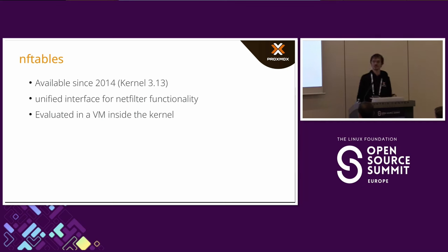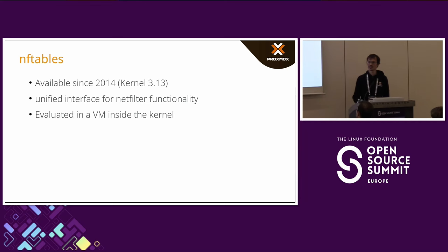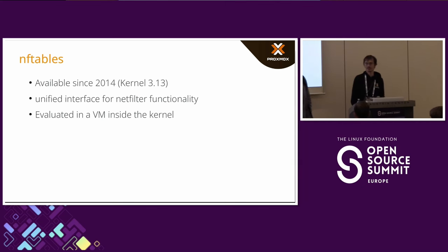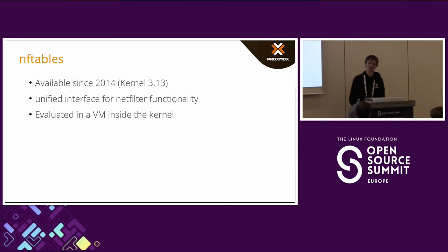The way it actually works: the user space tool, nftables, compiles the rules you write into bytecode for that specific VM, and that gets executed inside the kernel. The upside is that if you want to add a new protocol, you do not have to patch the kernel — you just patch the user space utility to emit some additional bytecode that gets imported into the kernel.